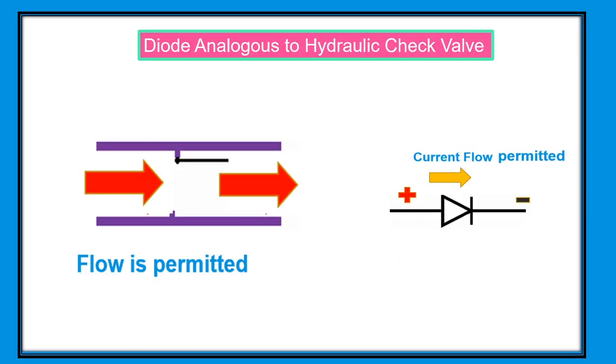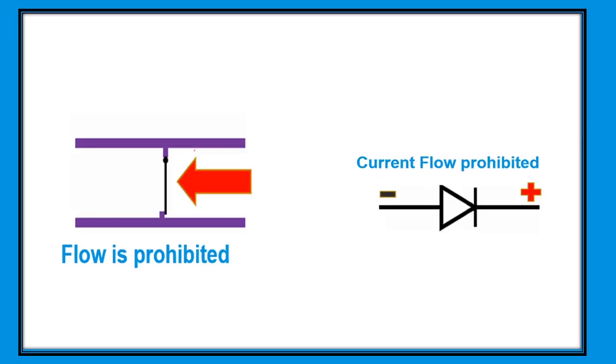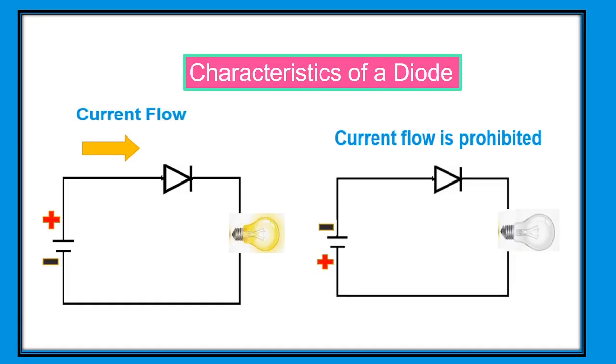The operation of a diode is similar to a check valve in a hydraulic system, which allows fluid to flow in one direction only and restricts the flow of fluid in the opposite direction.